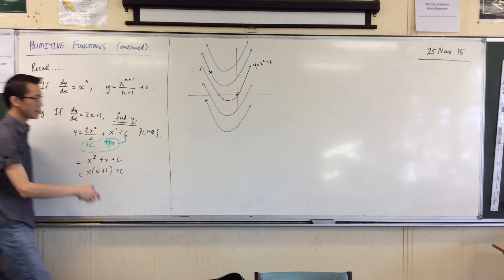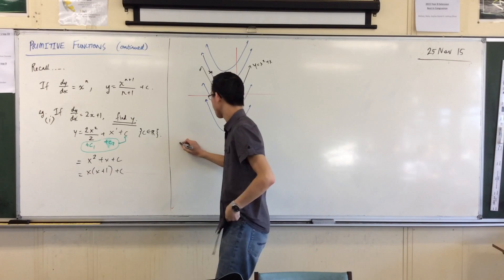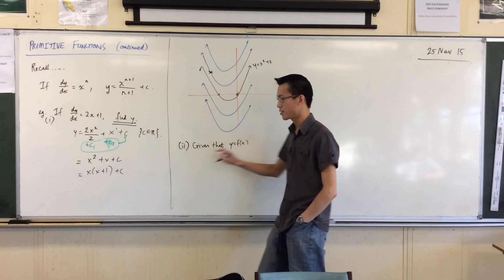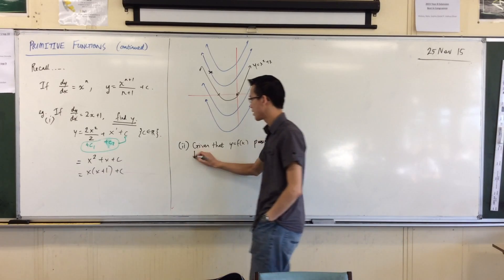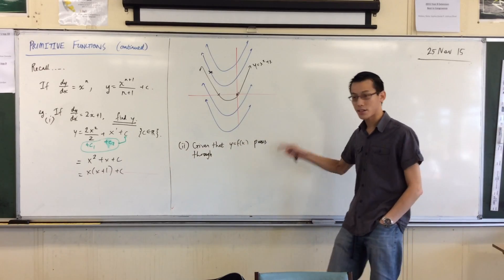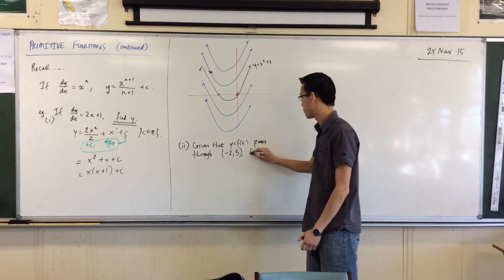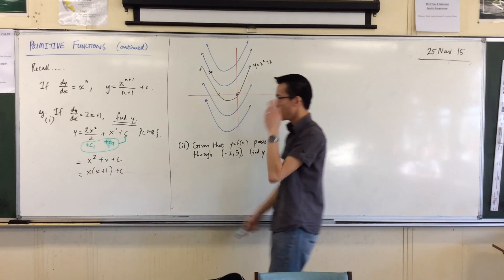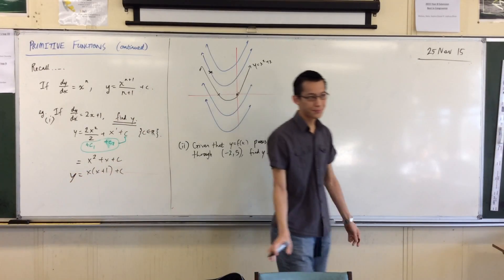So for instance, just as an extension of this, maybe we'll call this one part one. If in part two I know, given that y, that function of x, that guy, the primitive that we ended up with, given that that passes through - and I'll just give you an example, you can literally pick almost anything - the example I'm picking is passes through this point, negative two comma five. Now you can find the actual unique primitive. How are we going to do this? Well, the first step remains the same. You would have had to have anti-differentiated that and then ta-da, I've got a whole family. So this is what y is equal to.